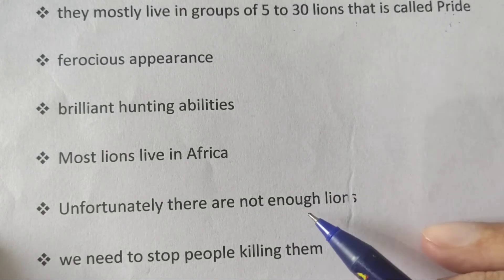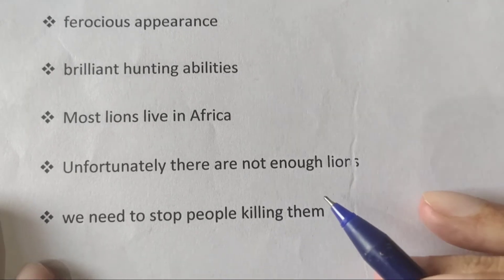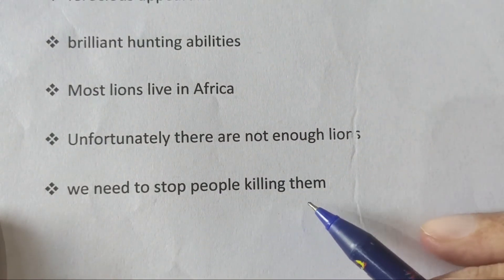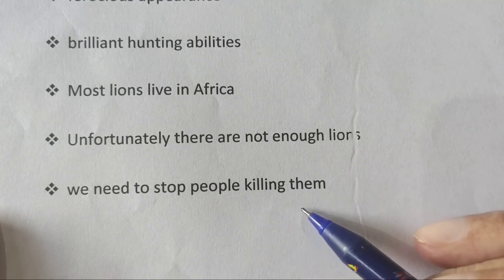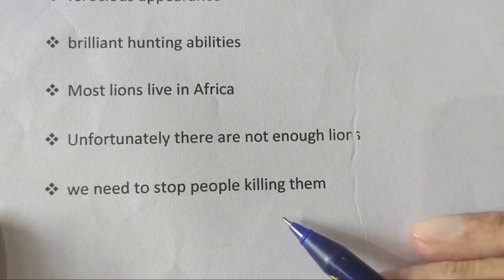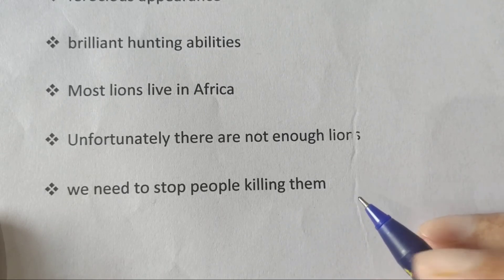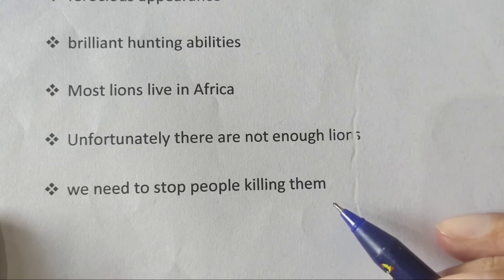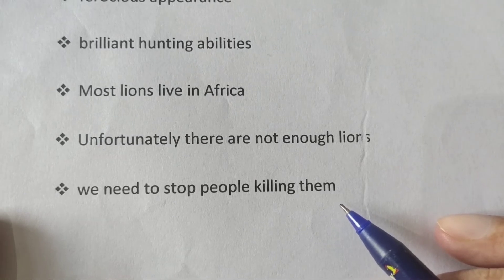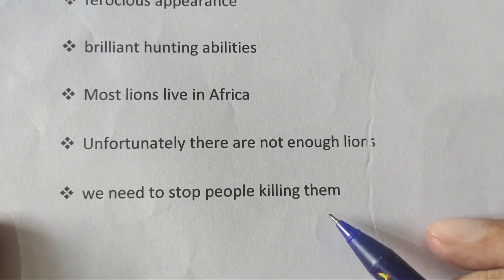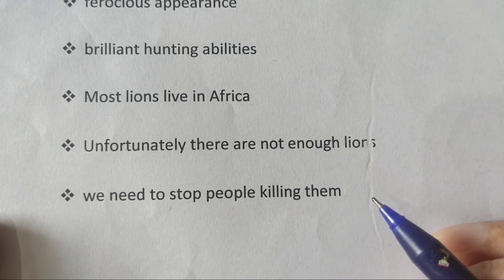Lions are on the verge of extinction. Note this down: 'Lions are on the verge of extinction.' Then you can talk about the need to stop people from killing them — we need to educate people and make them aware of why it is necessary, essential, and imperative not to kill lions. It would be very painful and frustrating, and not good for our ecosystem.